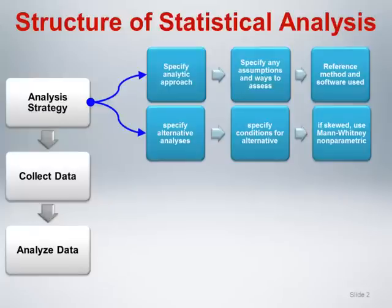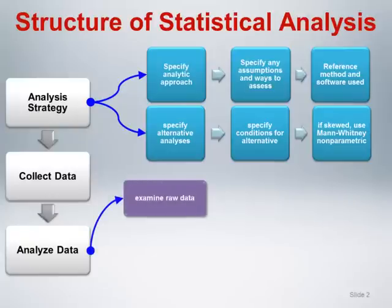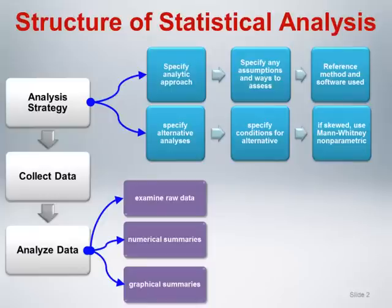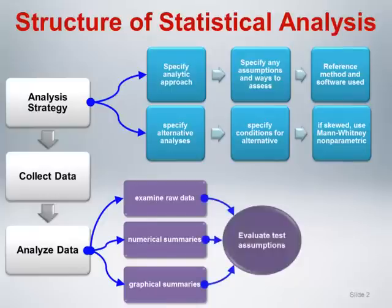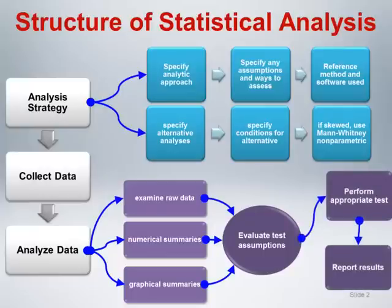This includes specifying under what conditions the alternative will be used. For example, if the distribution of the outcome variable is highly skewed, the Mann-Whitney nonparametric test will be used. During the data analysis phase, a standard data analysis approach may include things like examination of the raw data values themselves, calculation of numerical and graphical summaries of the outcome and related variables. These summaries are generally used to evaluate the assumptions needed to conduct the statistical test. The next step is to perform the appropriate test according to the analysis strategy and report the results.